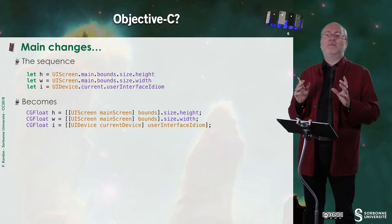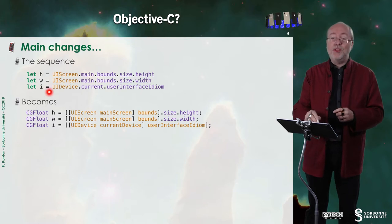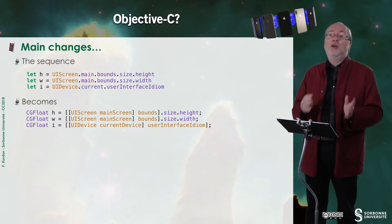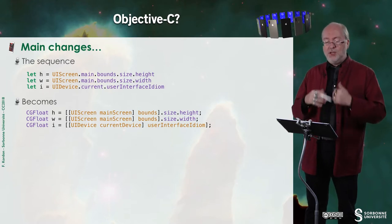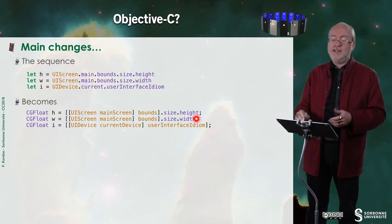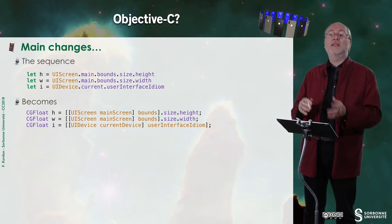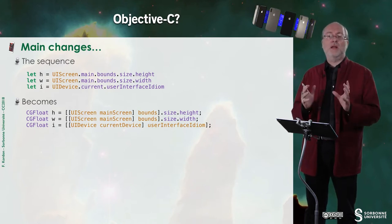In Objective-C there are not that many changes. The main change is how you get the screen dimensions: you query UIScreen.mainScreen.bounds.size, then UIScreen.mainScreen for the width. It's really very similar.